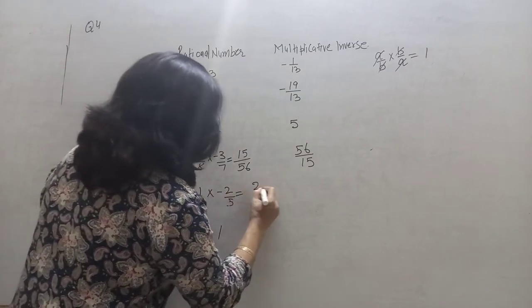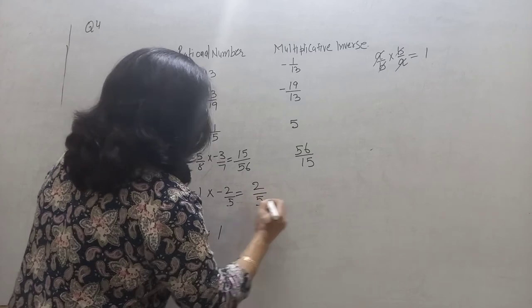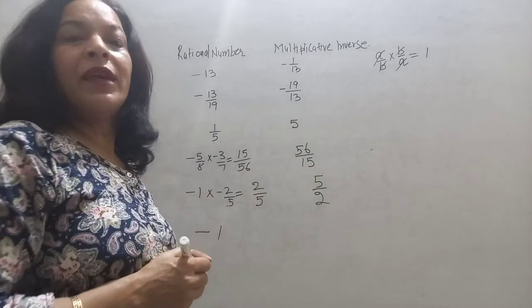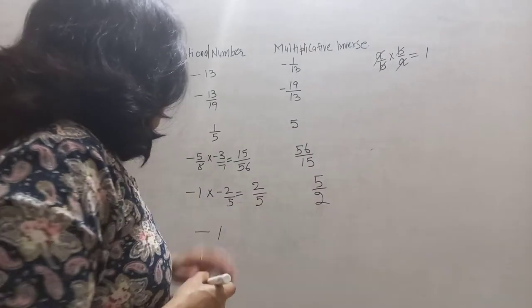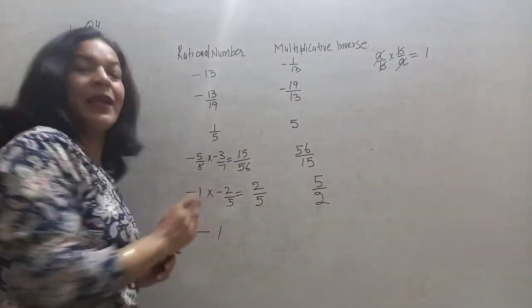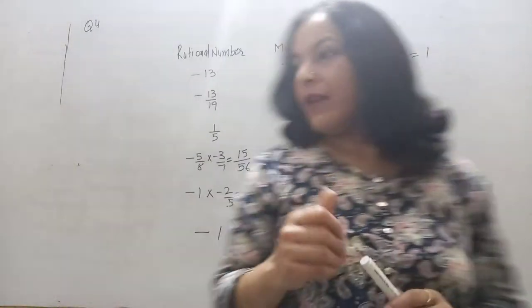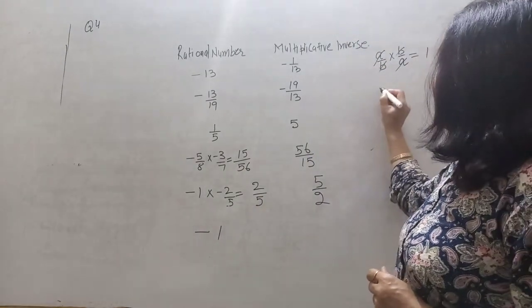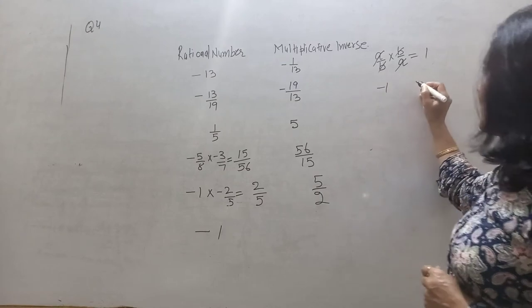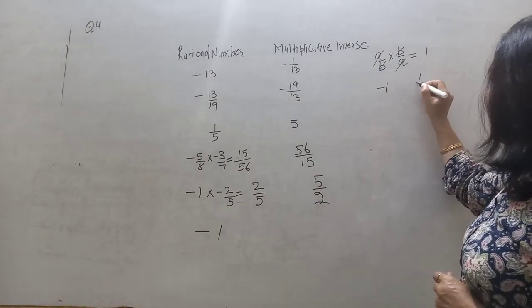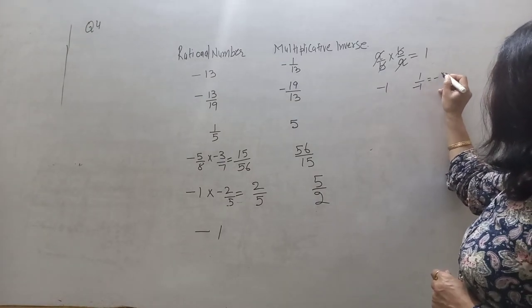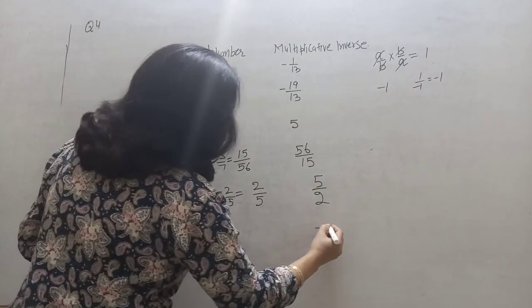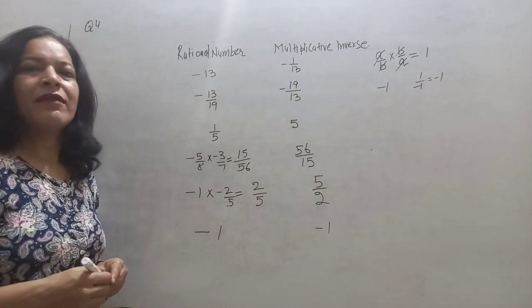For minus 1 into minus 2: that equals plus 2 upon 5, and its reciprocal or multiplicative inverse will be 5 upon 2. Now, what is the multiplicative inverse of minus 1? Its reciprocal is 1 upon minus 1.